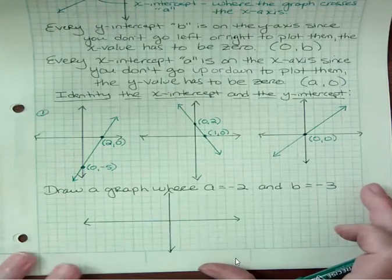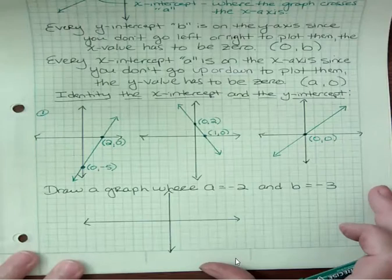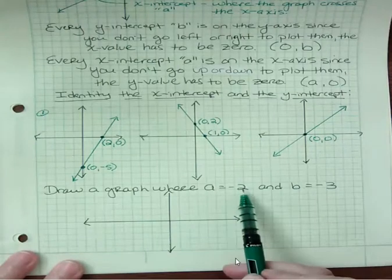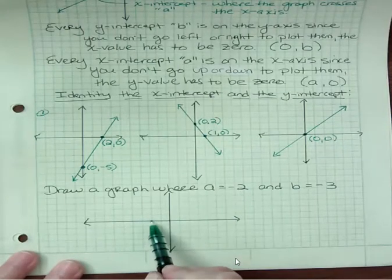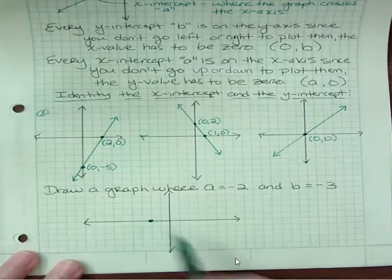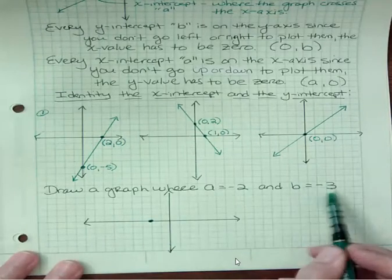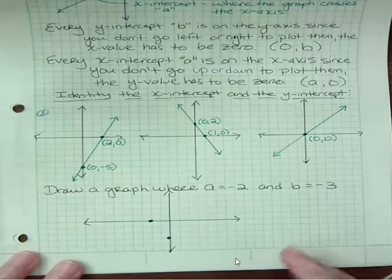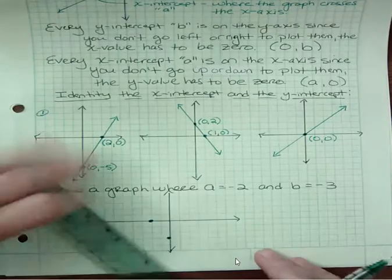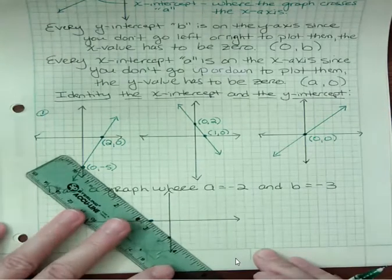So if I wanted to draw a graph that had an x-intercept of negative two, I'd have to go to the x-axis and draw negative two. And go to the y-axis and draw negative three. Then I could connect those two points to make a graph, to make a line, which just happens to be, the graph is a line.